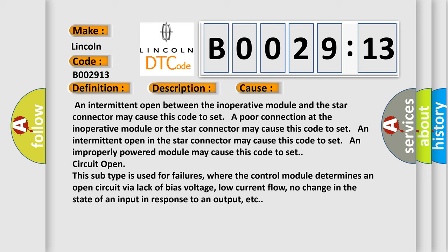This subtype is used for failures where the control module determines an open circuit via lack of bias voltage, low current flow, no change in the state of an input in response to an output, etc.